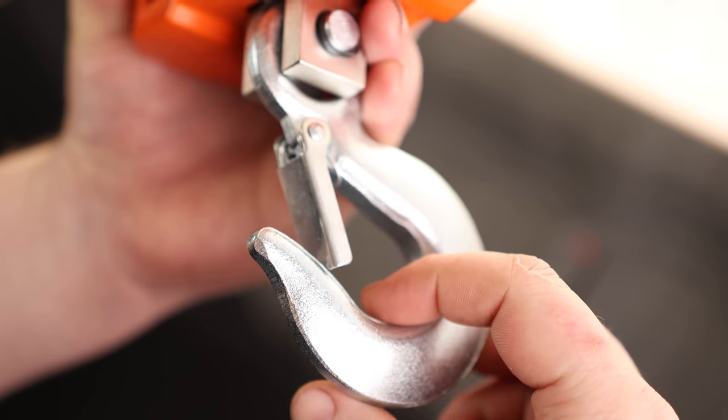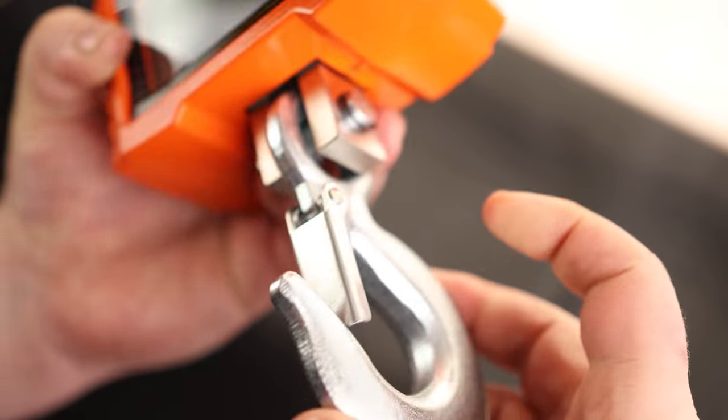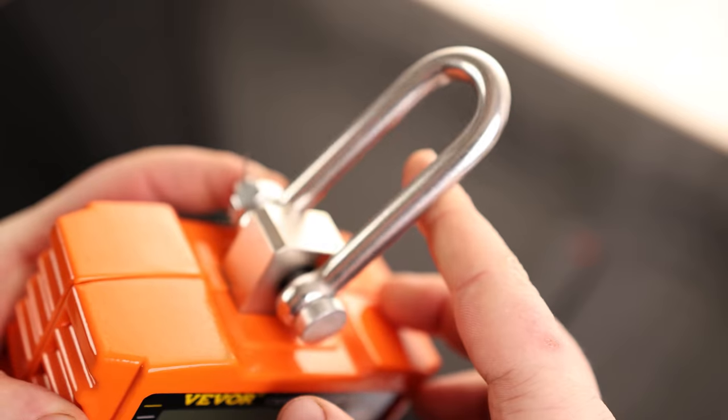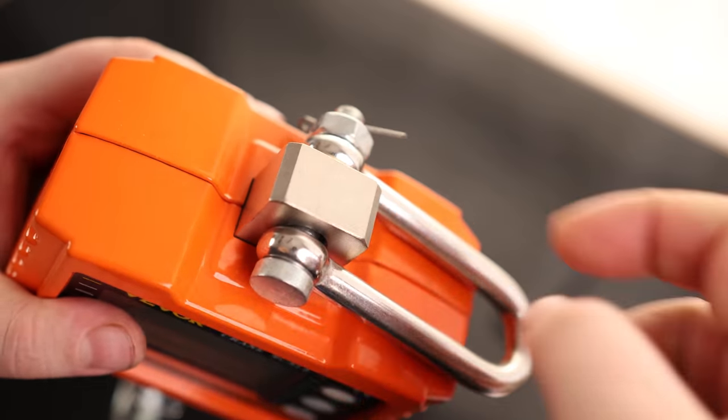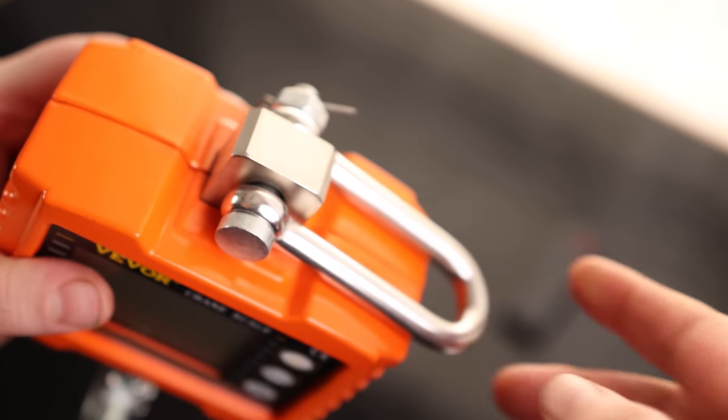As we can see, we've got a nice big hook on here. This is a super heavy-duty hook. And we've got a nice loop on the top that is held in with a cotter pin. So we can either put that on a hook, or we can remove that cotter pin and then throw this directly onto a chain.